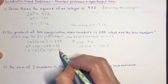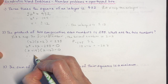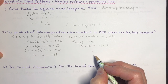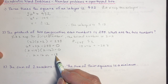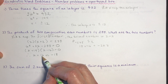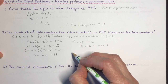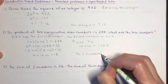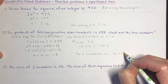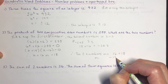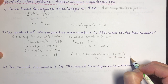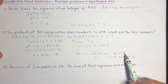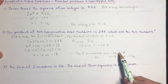We're solving an equation, so set it to zero and solve: x equals 16 or negative 18. These aren't the two numbers by themselves — the numbers must be consecutive. Therefore the two numbers are 16 and 18, or negative 18 and negative 16. The product of either pair equals 288, so we have two possible solutions.